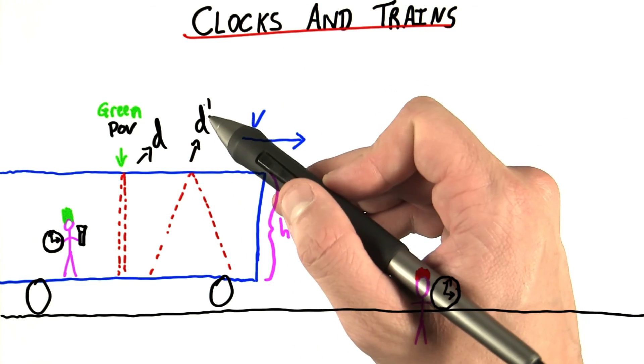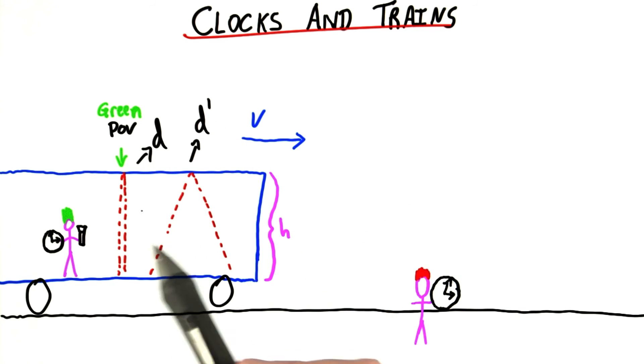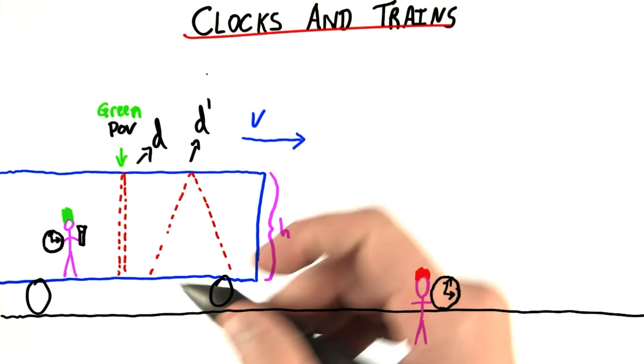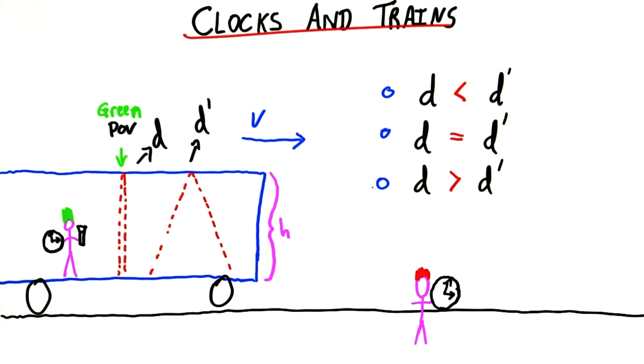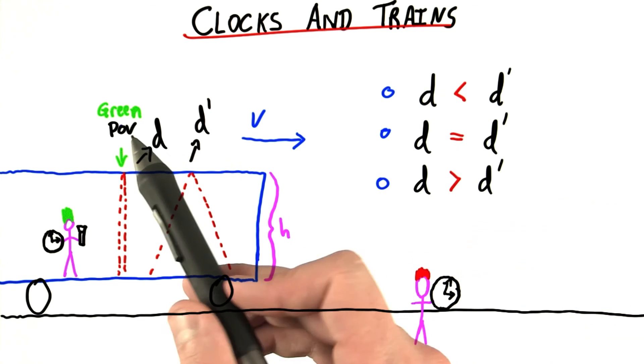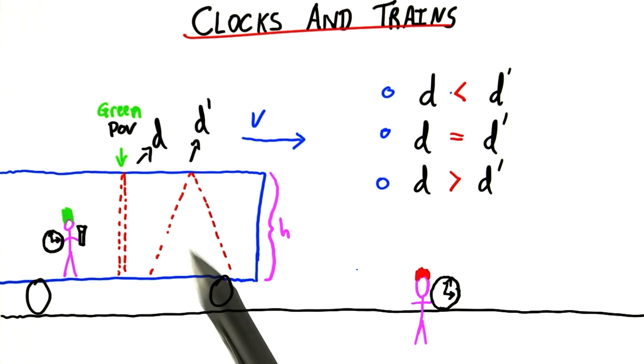This prime is what we're going to use often in special relativity to indicate a different frame. So we have our two different frames. Everything that we're talking about in the red frame, we'll put a prime on. Now my question is, which of these paths are longer? Actually, what I really want to know is which of these statements are true. Is the distance traveled in the green frame less than, equal to, or greater than the distance traveled in the prime frame?